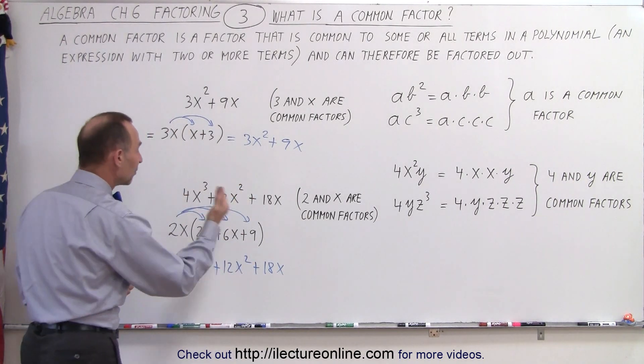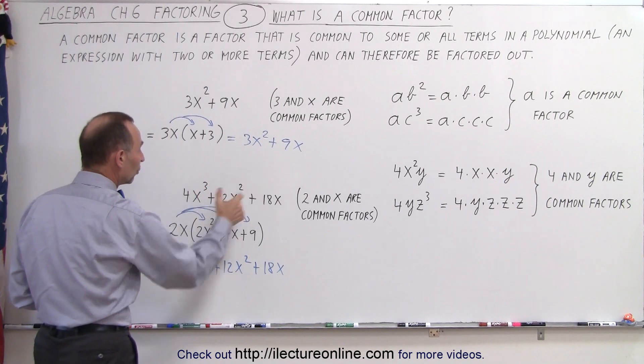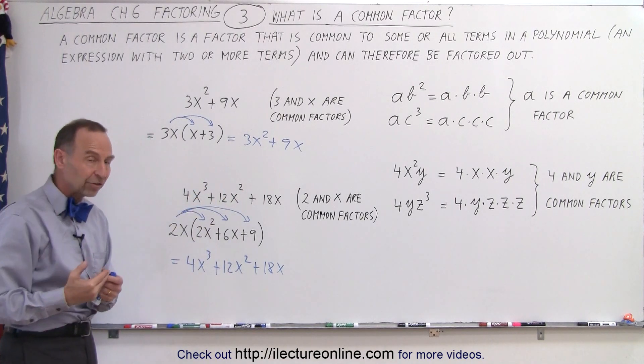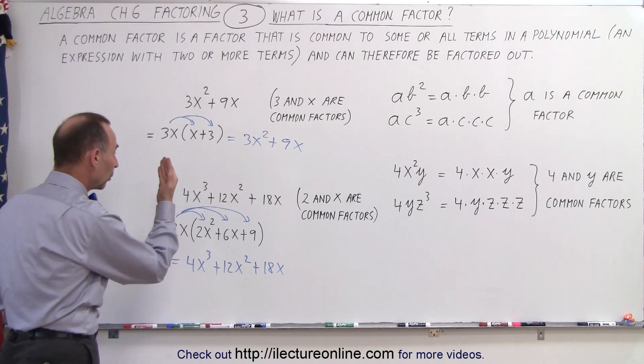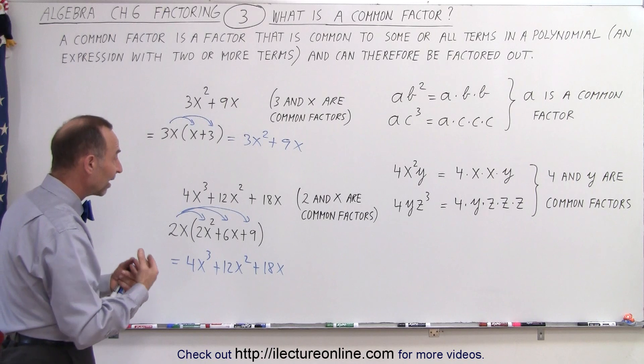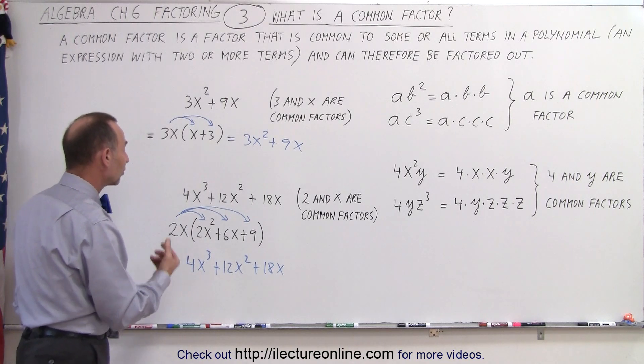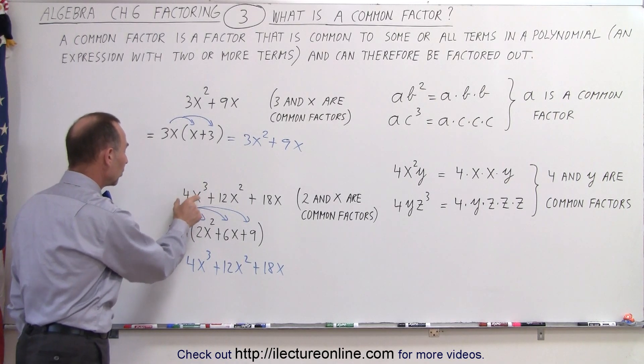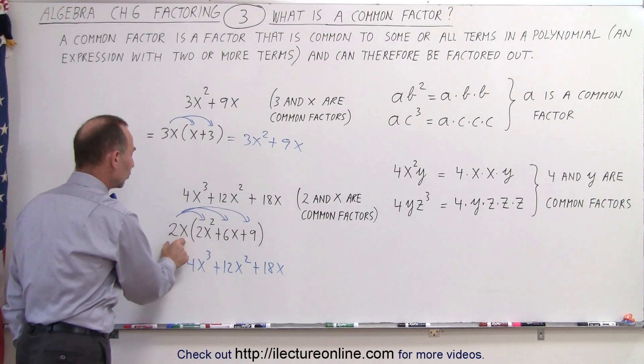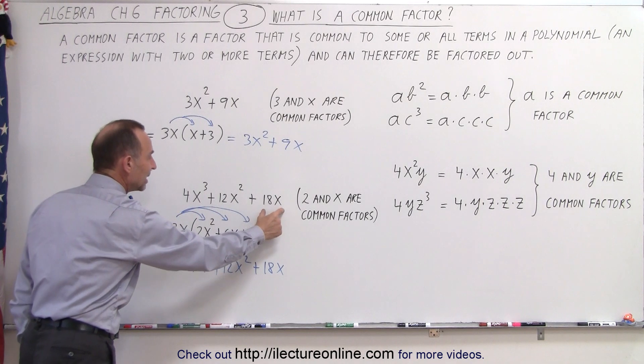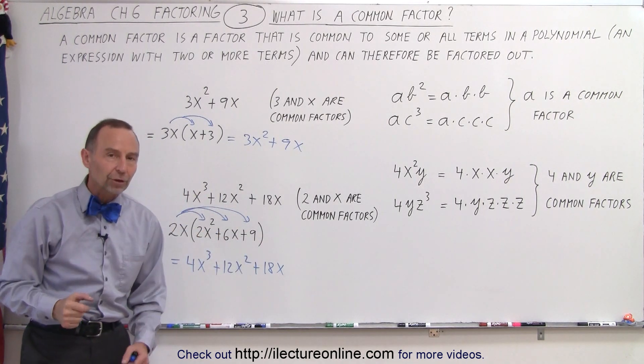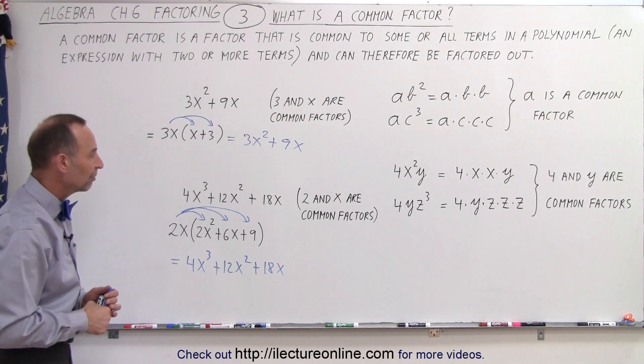So factoring out a common factor is looking at each of the terms, deciding what is common, what are the common factors in each term, or what could we divide each term by equally. In this case, the common factors are 2 and x. 4x³ divided by 2x gives me 2x². 12x² divided by 2x gives me 6x. 18x divided by 2x gives me 9. That's another way of looking at factoring out common factors.